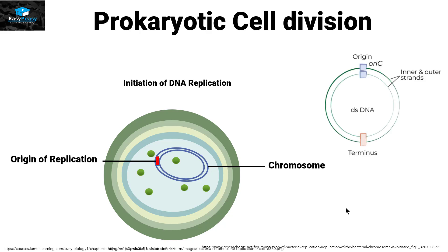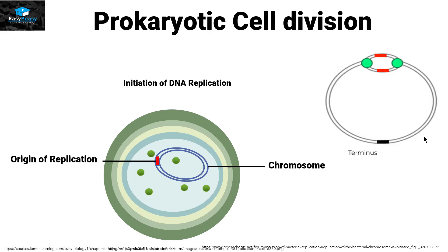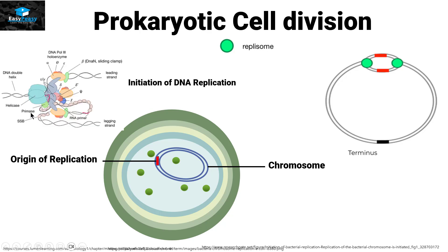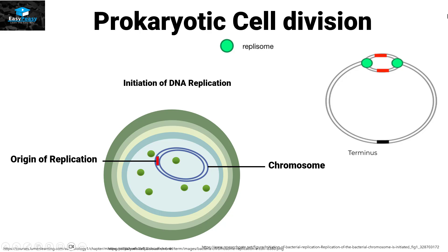The origin of replication is present on both strands — the inner strand and the outer strand of the chromosome. The DNA replication machinery, called the replisome, includes DNA polymerases, RNA primer, and all other things necessary for DNA replication. We have two circles with two points of origin of replication, and both replication machinery complexes start replication at the same point.